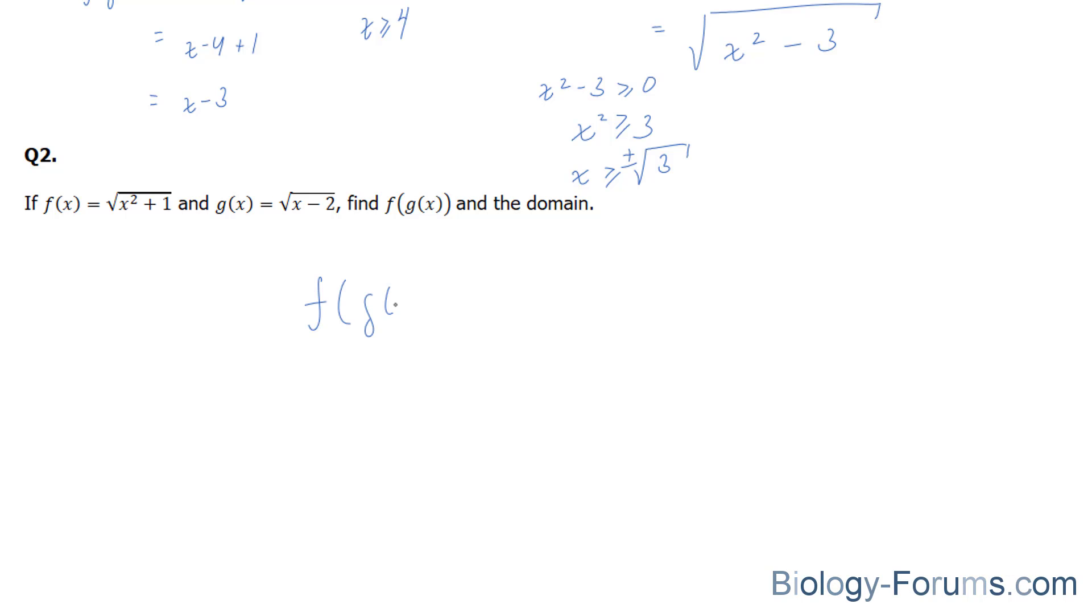So we'll start off with f of g of x. And we will apply this function into here. x minus 2 to the power of 2, don't forget the square root, plus 1. The square and the square root cancel, and you end up with x minus 2 plus 1 is equal to the square root of x minus 1.